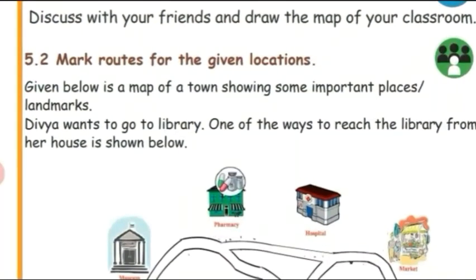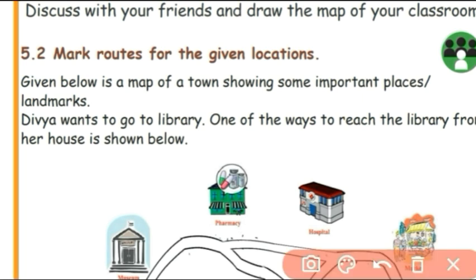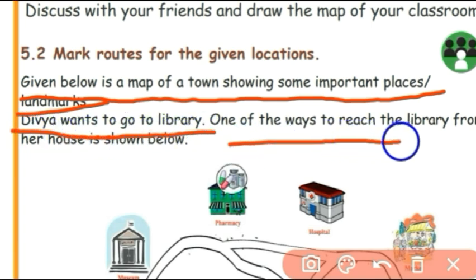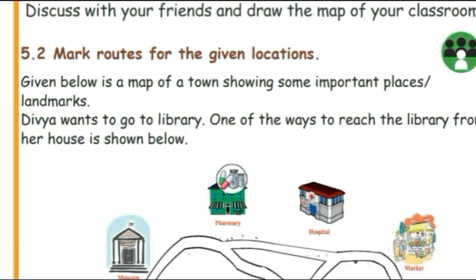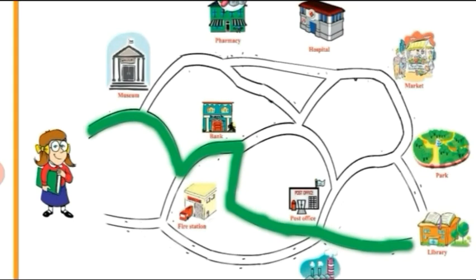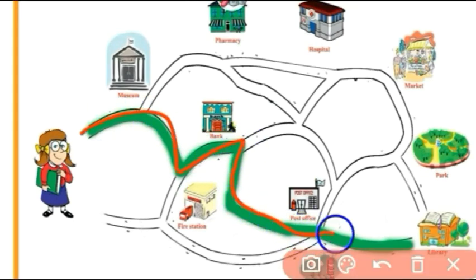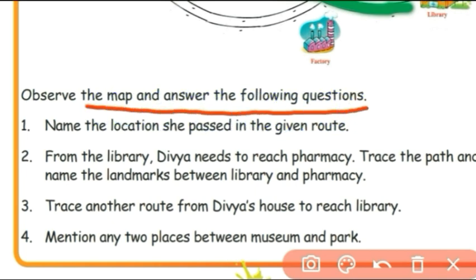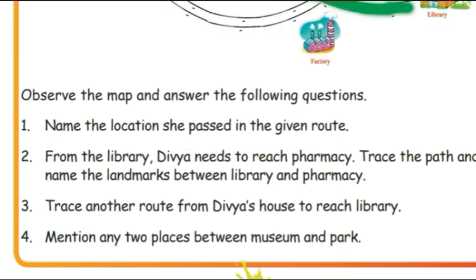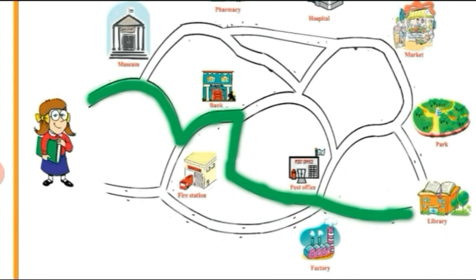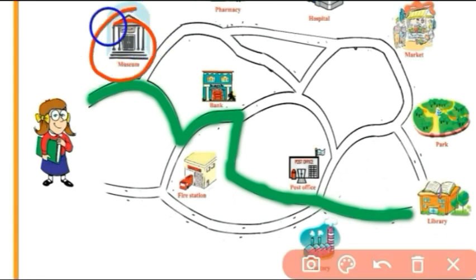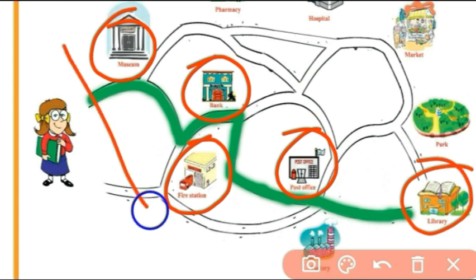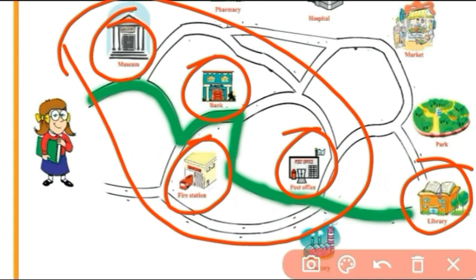Next, mark routes for the given buildings. Given below is a map of a town showing some important landmarks. Divya wants to go to the library. One of the ways to reach the library from her house is shown below. Observe the map and name the locations she passed in the given route: Museum, Bank, Fire Station, Post Office, Library.